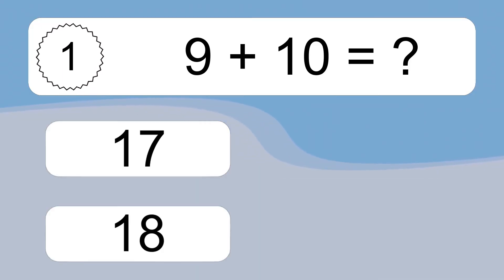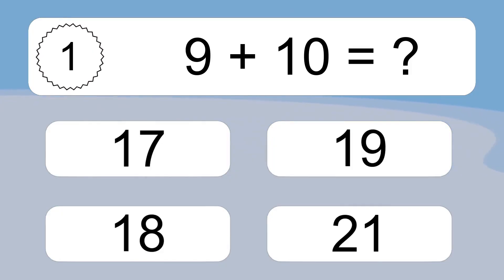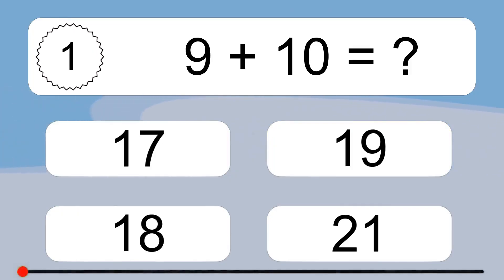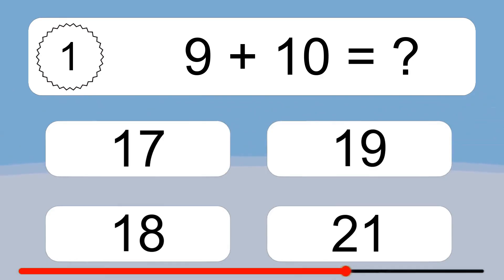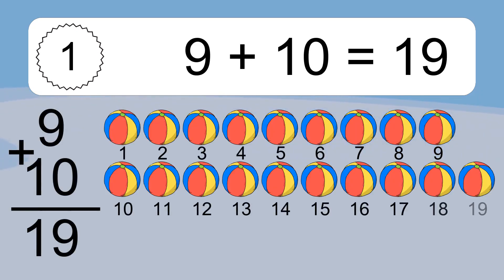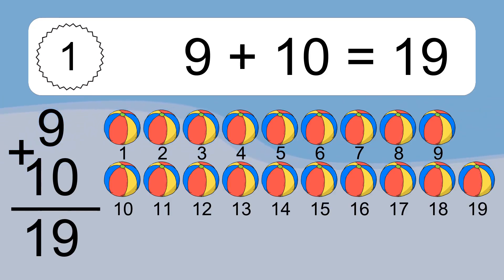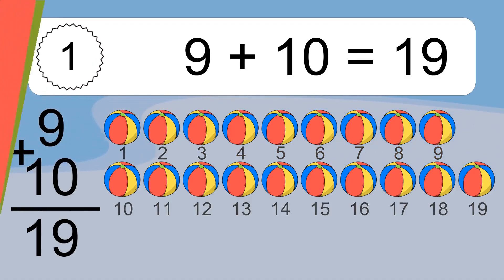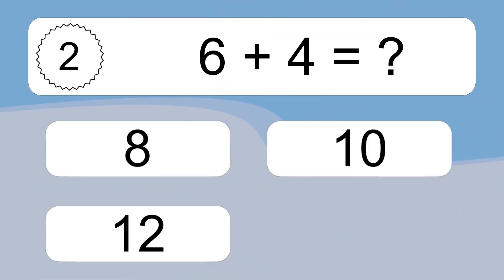9 plus 10 equals what? 9 plus 10 equals 19. Let's count it: 1, 2, 3, 4, 5, 6, 7, 8, 9, 10, 11, 12, 13, 14, 15, 16, 17, 18, 19.